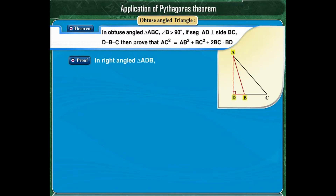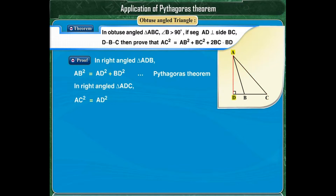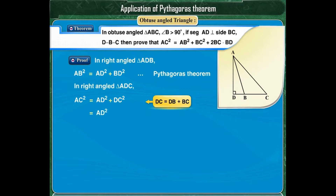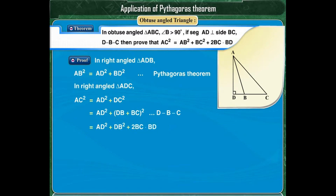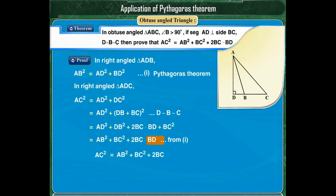In right-angled triangle ADB, AB squared is equal to AD squared plus BD squared. In right-angled triangle ADC, by Pythagoras Theorem, AC squared is equal to AD squared plus DC squared. But DC is equal to DB plus BC, as point B lies between points D and C. Therefore, AC squared is equal to AD squared plus (DB plus BC) squared, which equals AD squared plus DB squared plus 2 into BC into BD plus BC squared. Since AD squared plus BD squared equals AB squared, thus AC squared is equal to AB squared plus BC squared plus 2 into BC into BD.